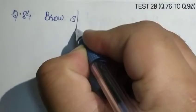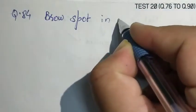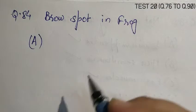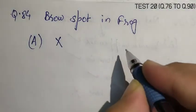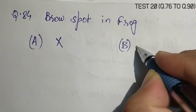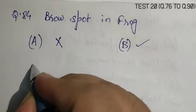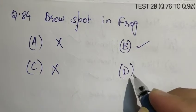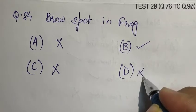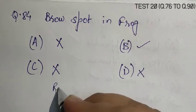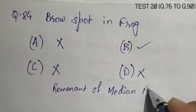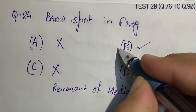Question number 84, Pro spot in frog is. A. Vestige of nose, that is false. B. Vestige of median eye, that is correct. C. Light sensitive spot, that is wrong. D. Swimming sensitive spot, that is wrong. It is a remnant of median eye. So, the correct answer is B.